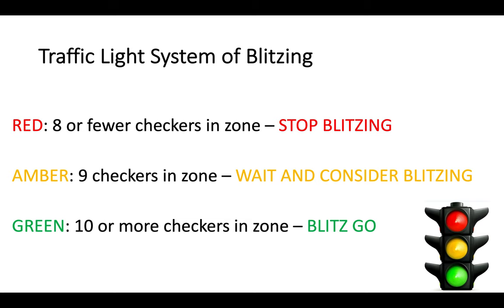We have red, which means you would have eight or fewer checkers in the zone and it's usually the right course of action to pump the brakes and stop blitzing. We have amber, which would mean you have nine checkers in the zone, and in that instance you should wait and consider whether or not blitzing is the right course of action. And we have green, when you have ten or more checkers in the zone, and then you should put your foot on the gas and play blitz go.